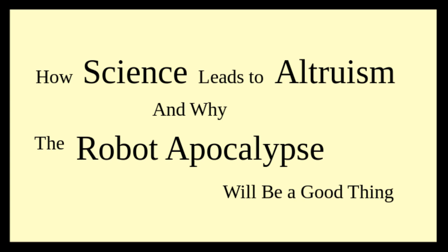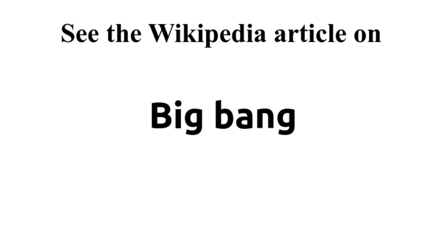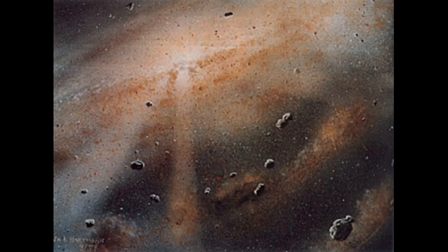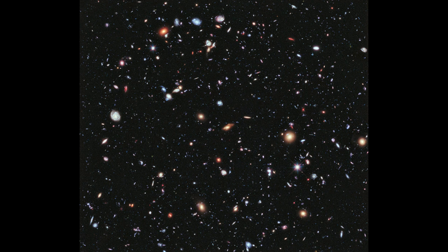13.8 billion years ago, a large explosion occurred, hurling matter in all directions. As gravity pulled matter together, swirls and eddies formed within the currents of expanding matter. Within these swirls, smaller and faster spinning swirls formed. One of them is comprised of everything we have yet been able to observe about the universe.